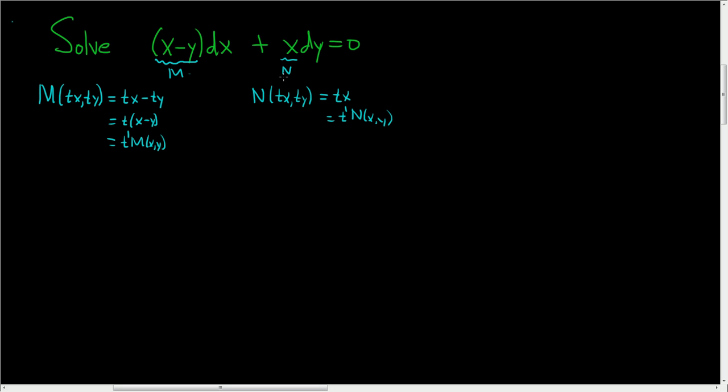So if big M and big N are both homogeneous of the same degree, we say we have a homogeneous differential equation. Now this is not to be confused with homogeneous in the other sense which you study later for higher order equations.